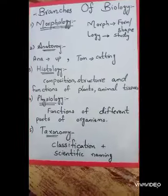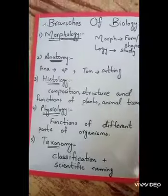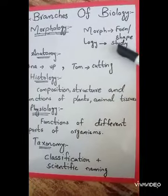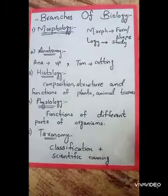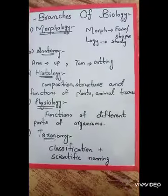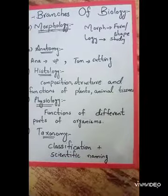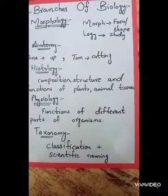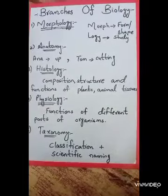Let's discuss the first branch of biology, that is morphology. The word morphology is derived from two words: morph and logi. Morph means form and shape, logi means study. So if you study the external form or shape of any living organism — for example, if we talk about someone's face, whether it is oval or round, their ears, their nose — the external study of a living organism is called morphology.